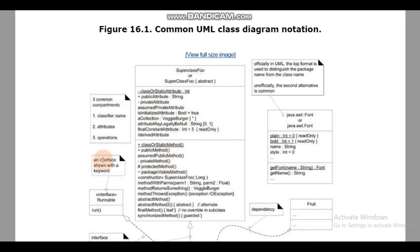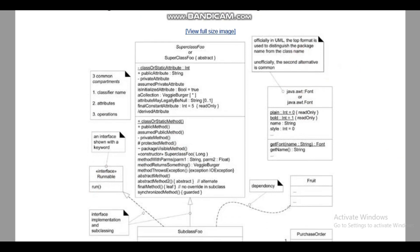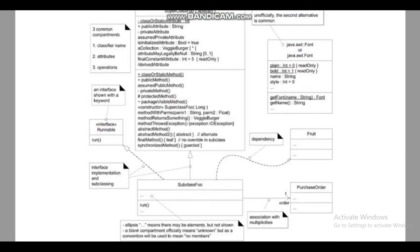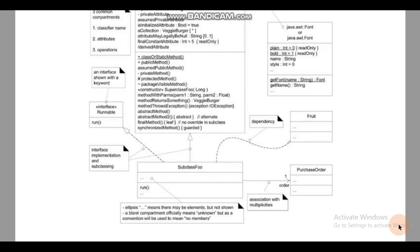An interface is shown with a keyword. There is also a generalization and association shown with the multiplicity. The multiplicity value is written on the link. These are the standard notations used in UML class diagrams.